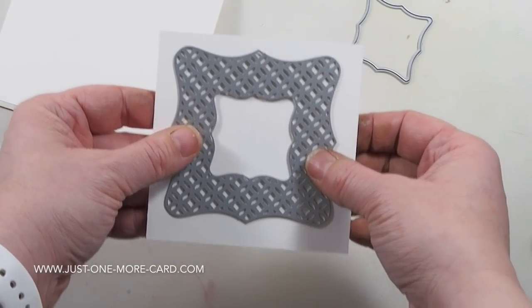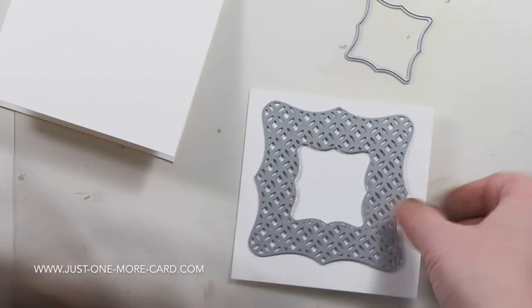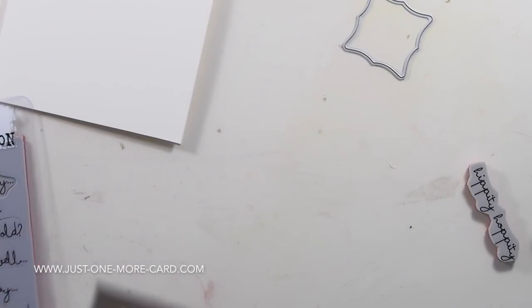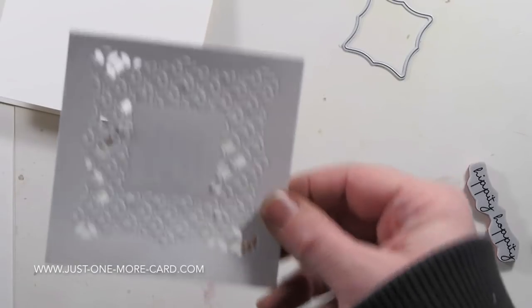Now I'm going to leave a little bit more space down here even though I could center the die, but I need to stamp my sentiment somewhere. That's why I'm leaving more space towards the bottom of this panel, which is cut to 4 by 4 inches. So that's a square panel that will go on my card base.